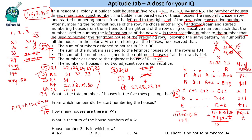Now we can answer the questions. He started numbering from 20. R4 has 4 houses. The sum of house numbers in R5 is 20+21 = 41. House number 34 is in R3. This completes the solution to the set.